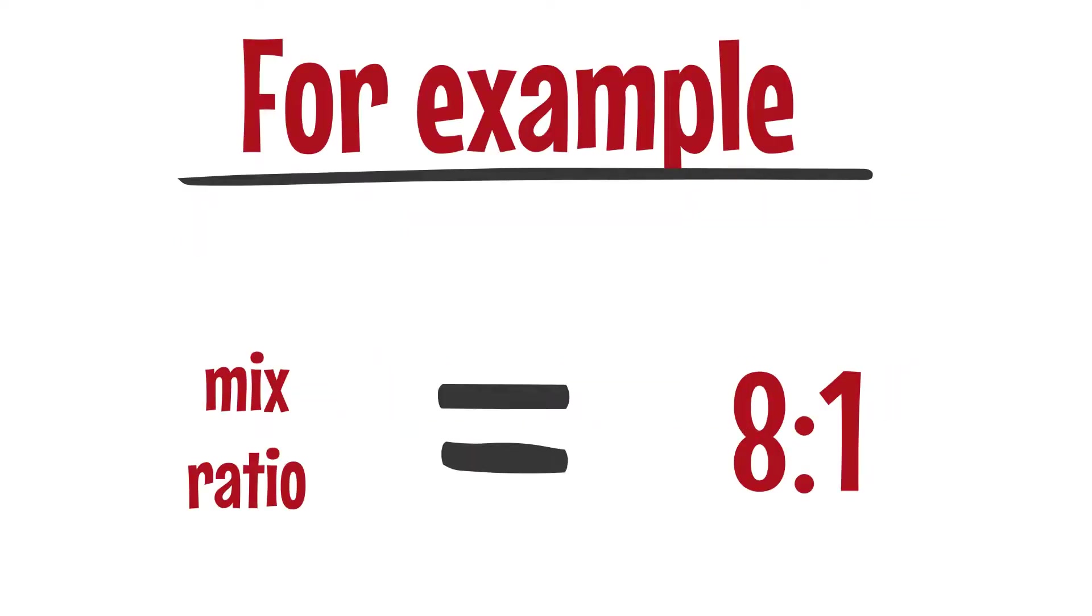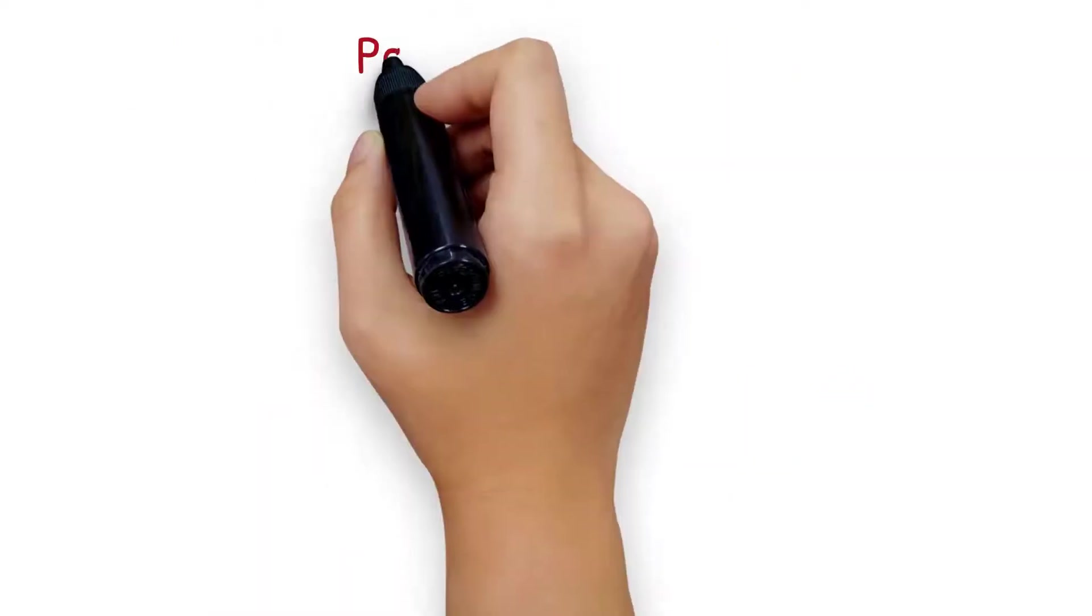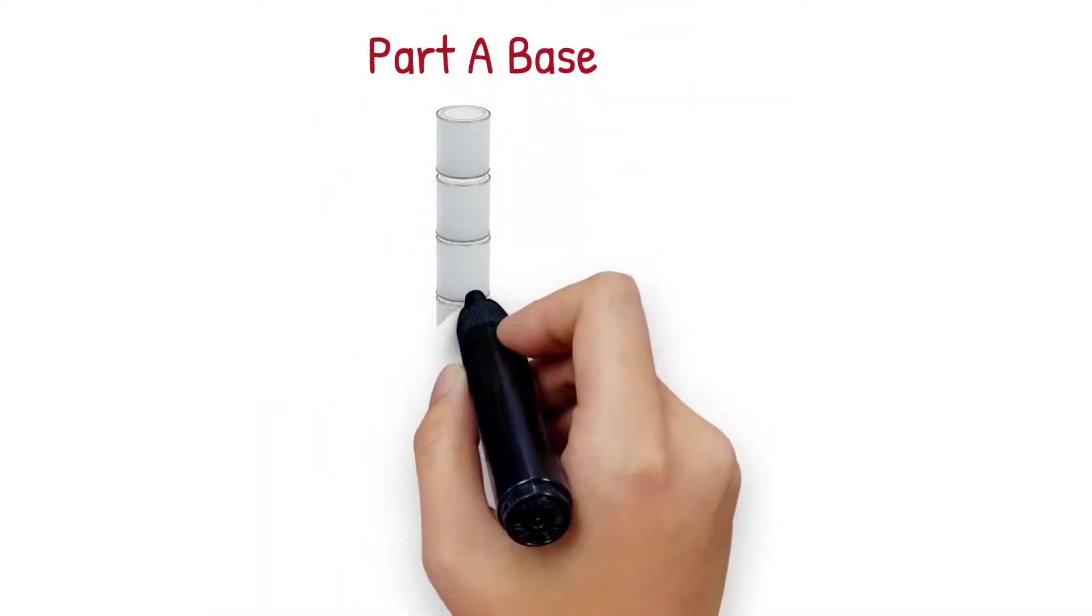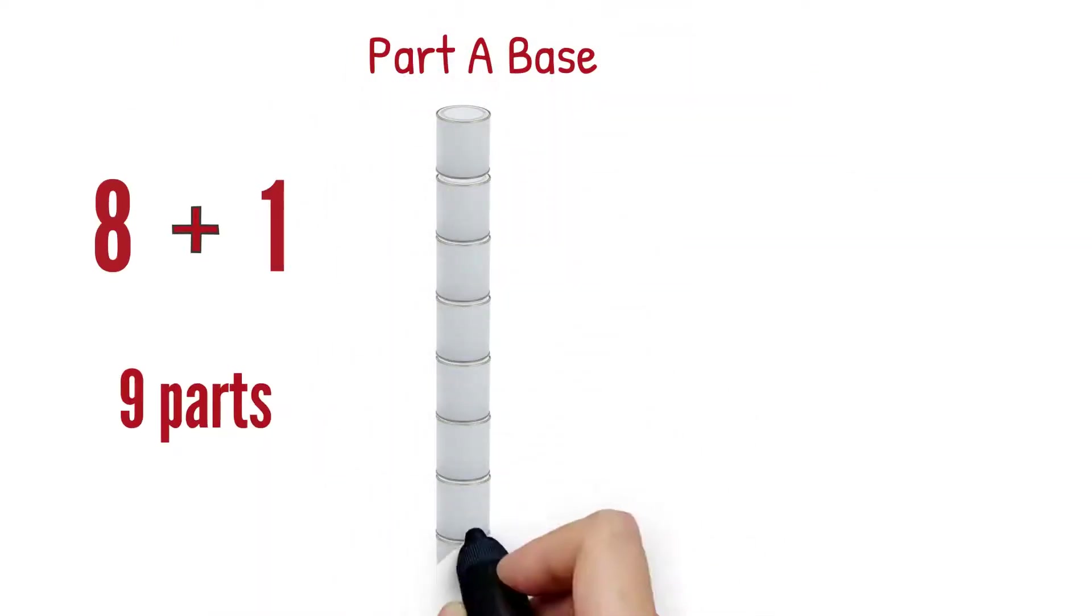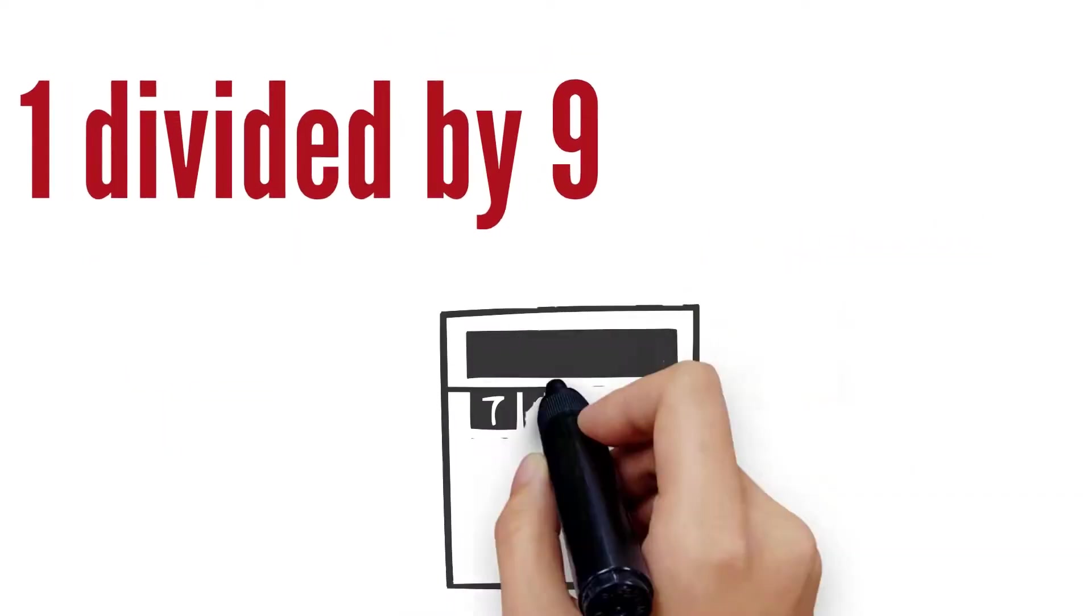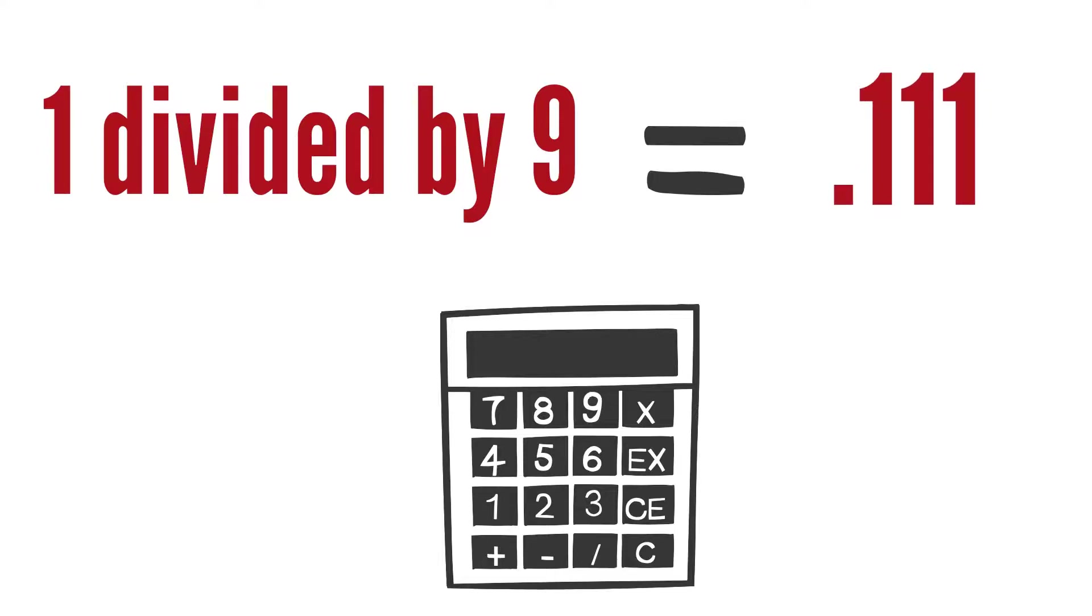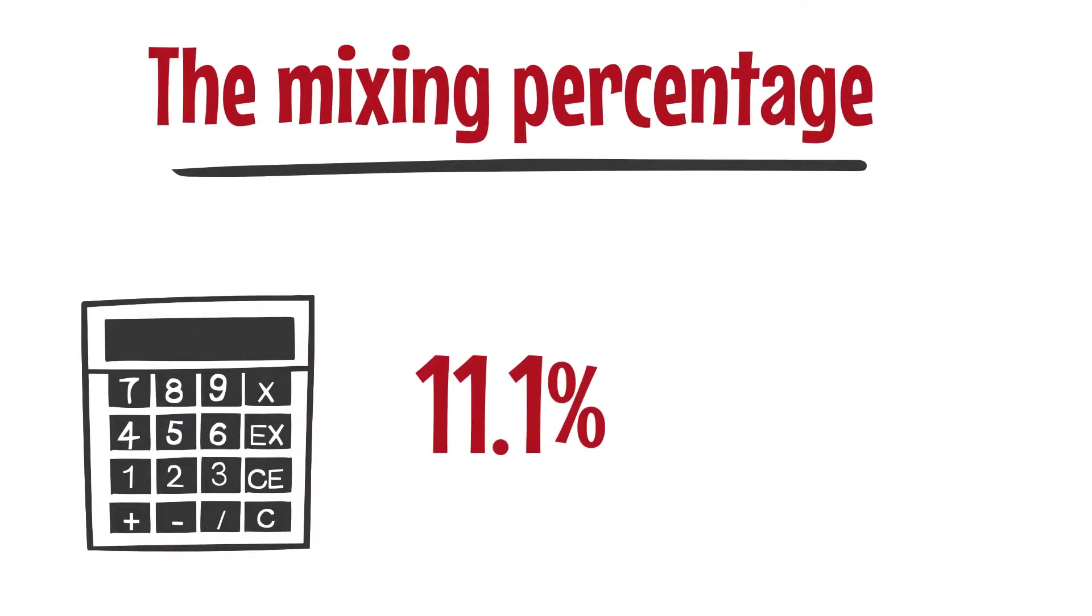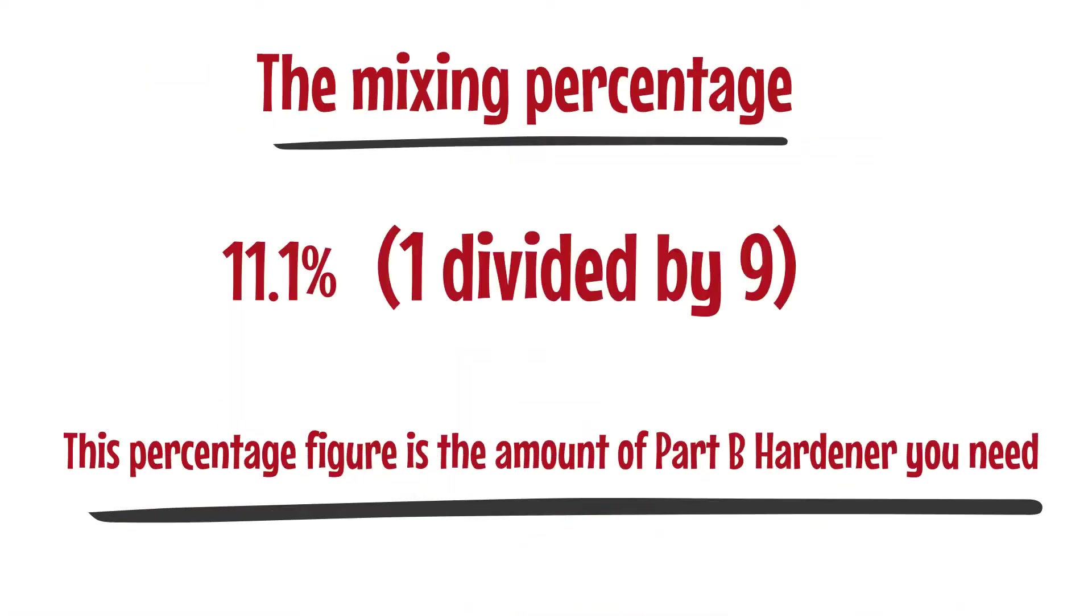For example, if your mix ratio is 8 to 1, or 8 parts Part A base to 1 part Part B hardener, there are 8 plus 1, or 9 parts. 1 divided by 9 equals 0.111. The mixing percentage is 11.1%, 1 divided by 9. This percentage figure is the amount of Part B hardener you need.